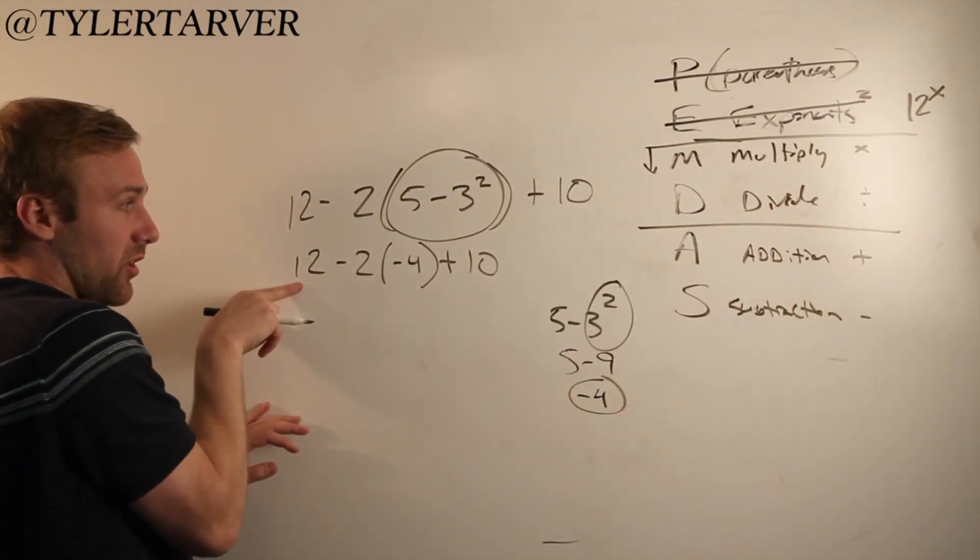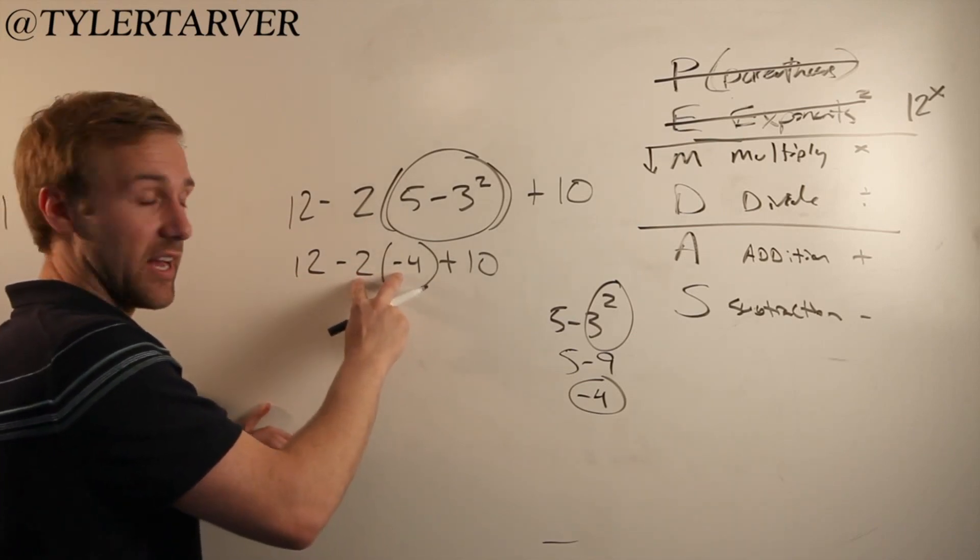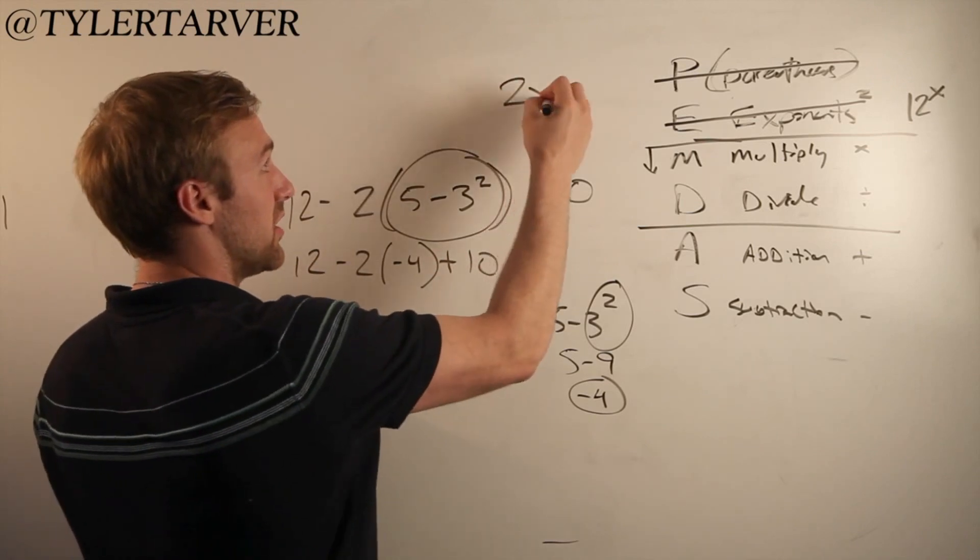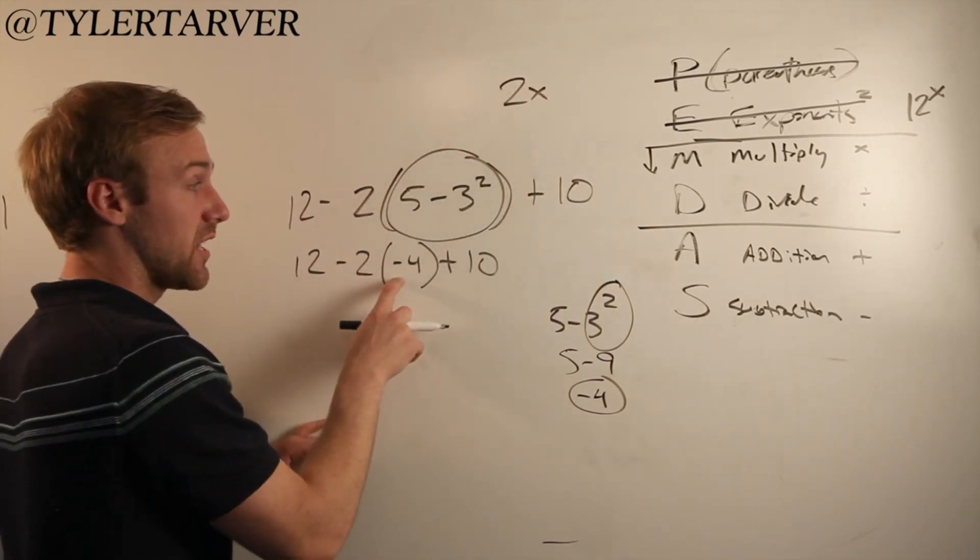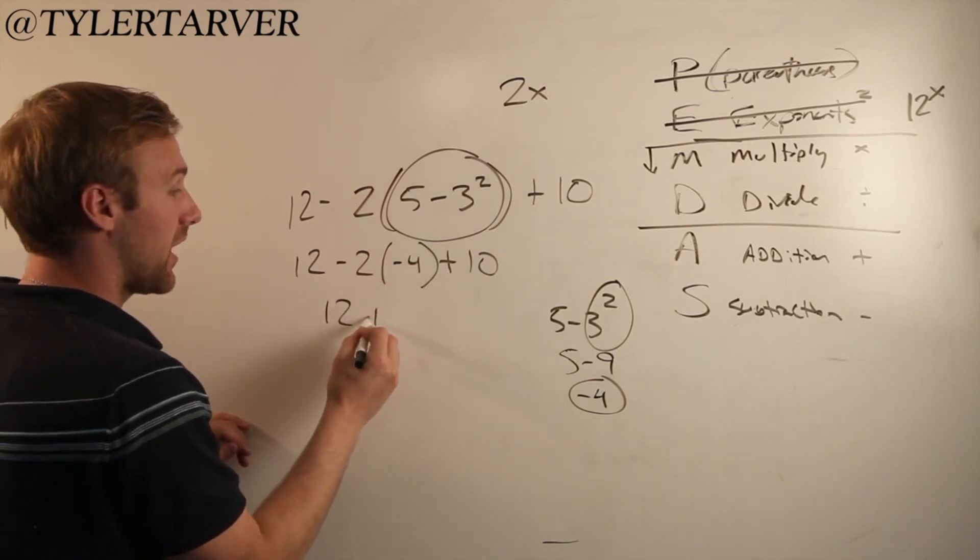I'm going to multiply going across. Now, this means multiply. Anytime you have a parentheses right next to something else, it's essentially the same as multiply. Just like 2x would be 2 times x. This is negative 2 times negative 4. So negative 2 times negative 4 makes a positive 8.